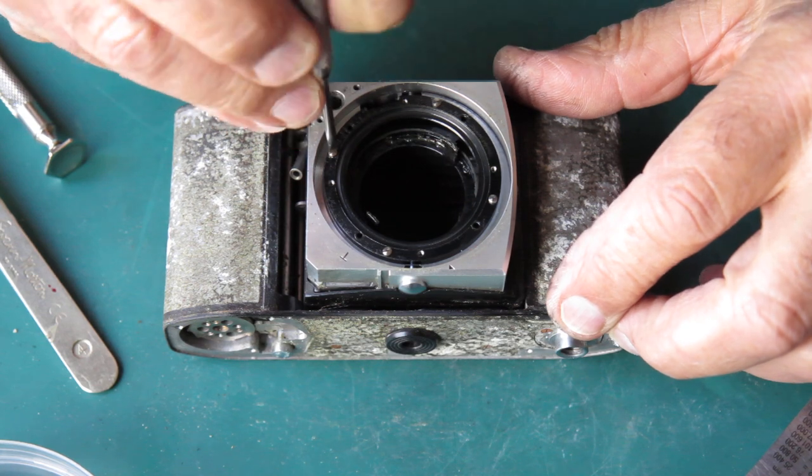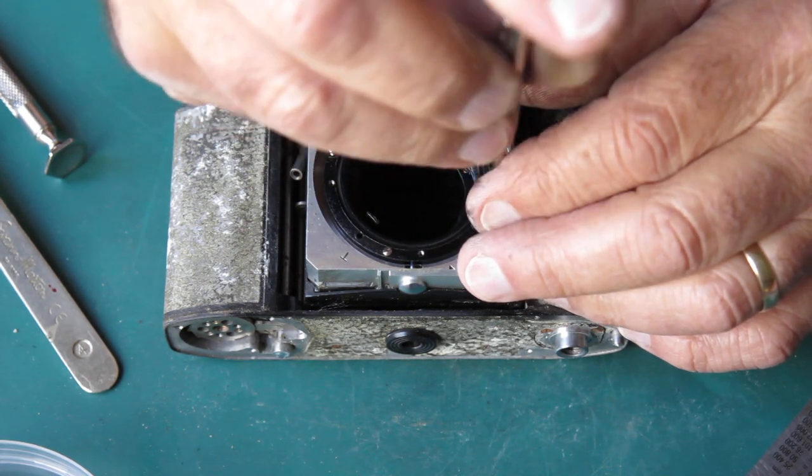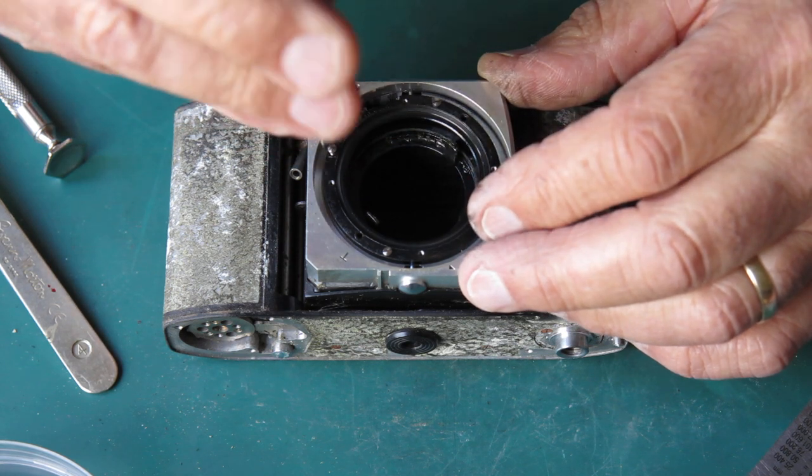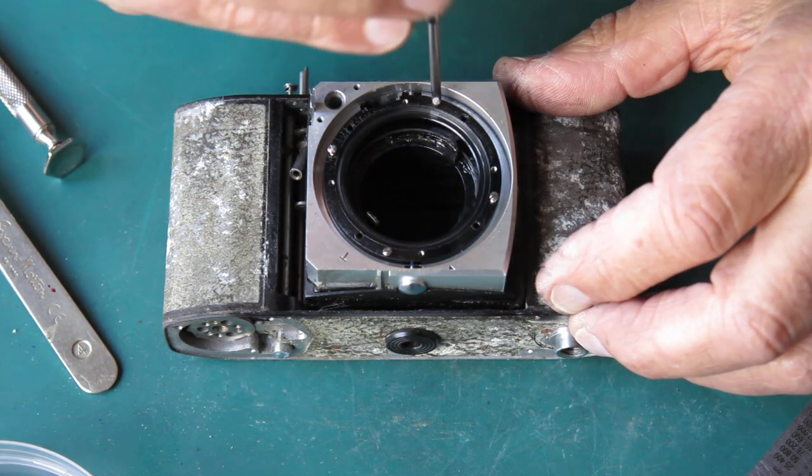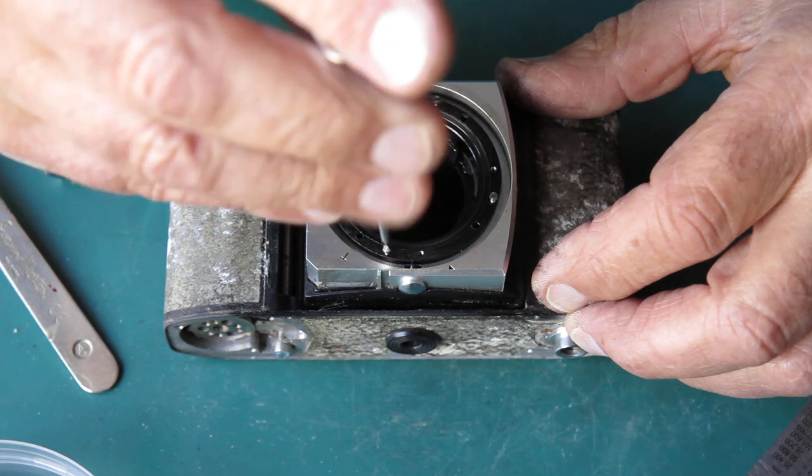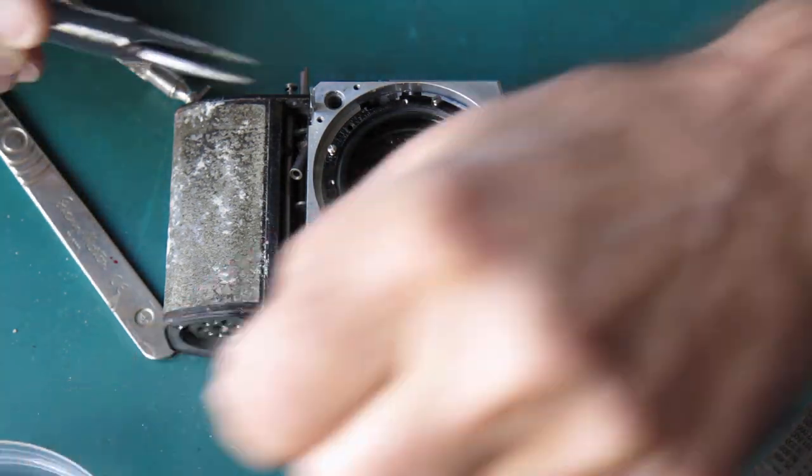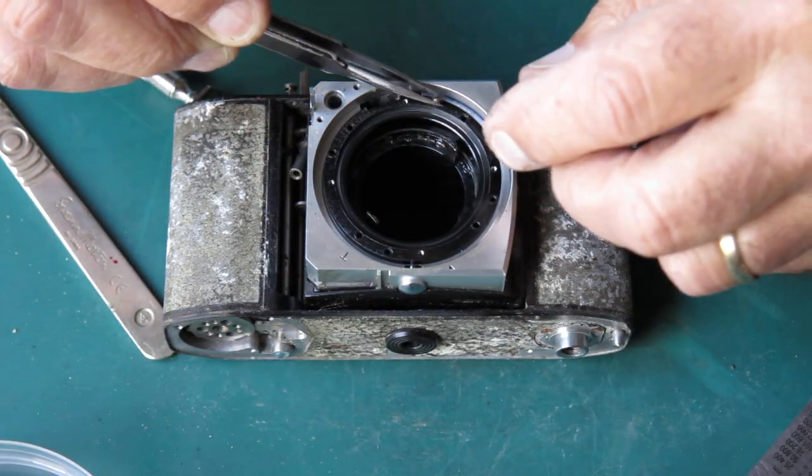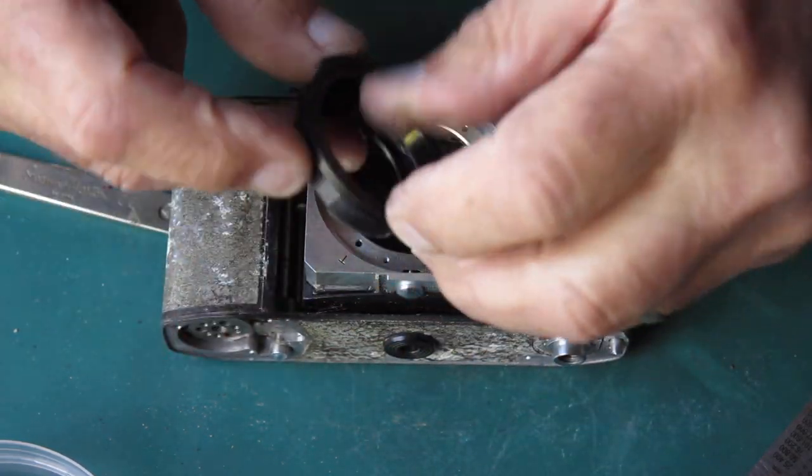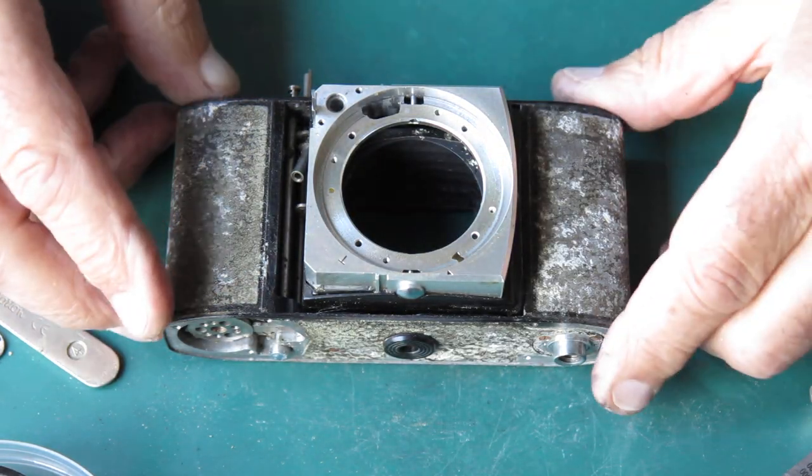All right, four screws here hold the focus mount into the front standard. Two of them were loose. If those screws come loose, then effectively your whole lens and shutter assembly can rattle backwards and forwards in the mount, which means that your focus can be a little bit less than precise. Okay, so that's good and done.